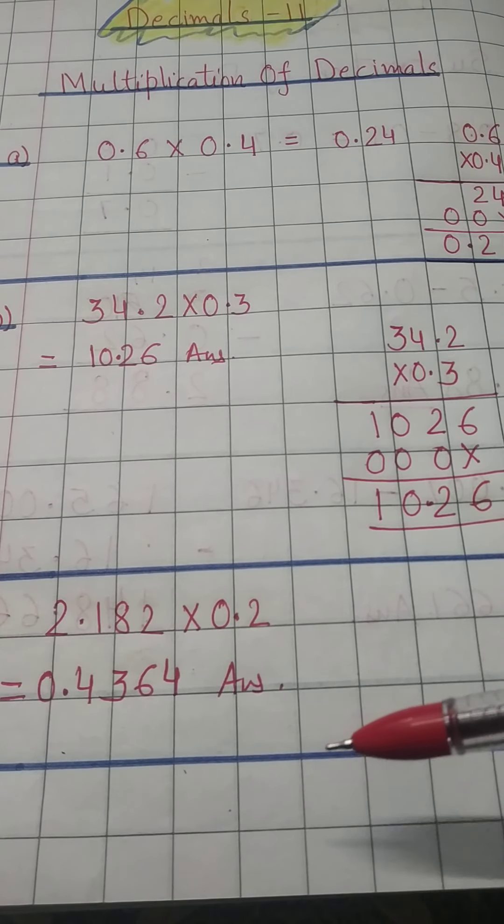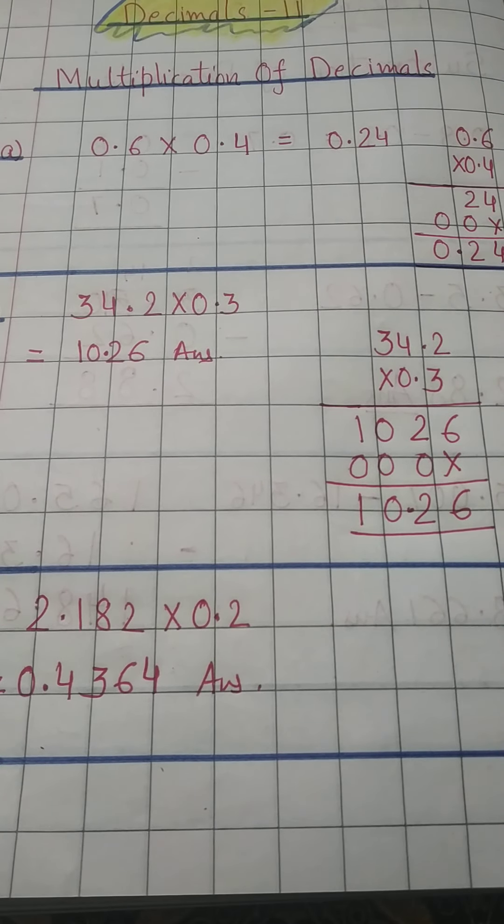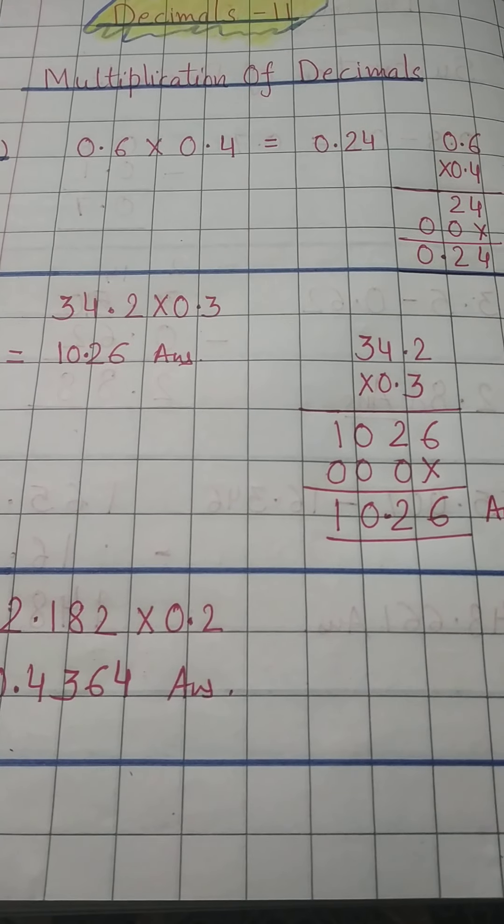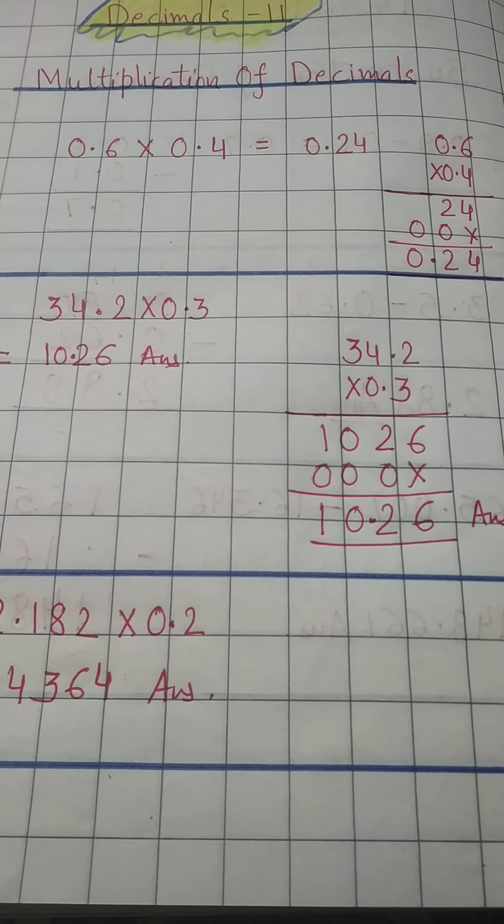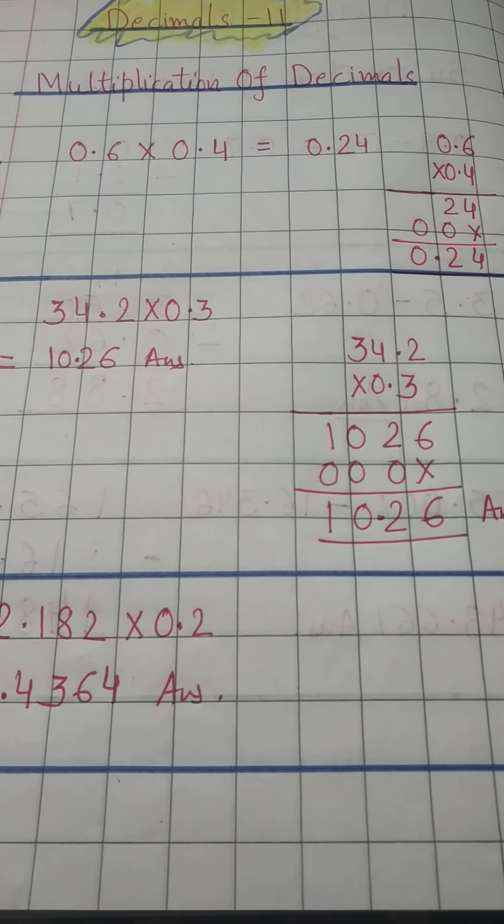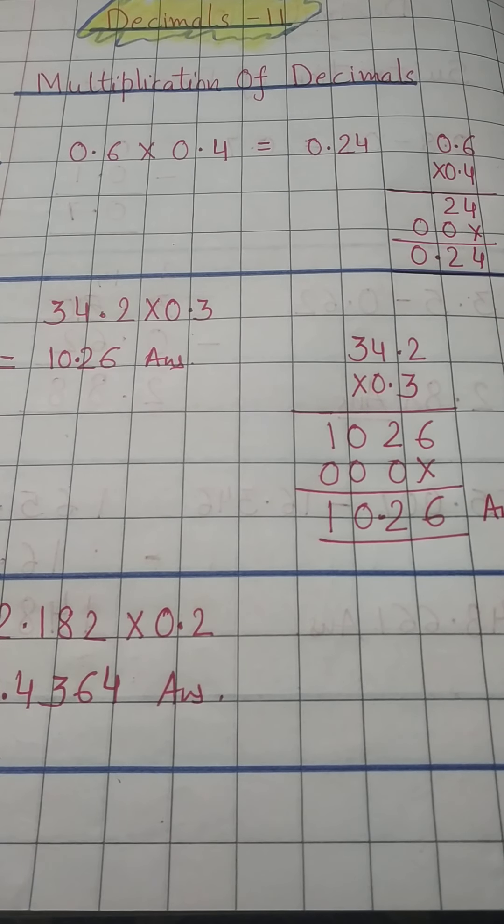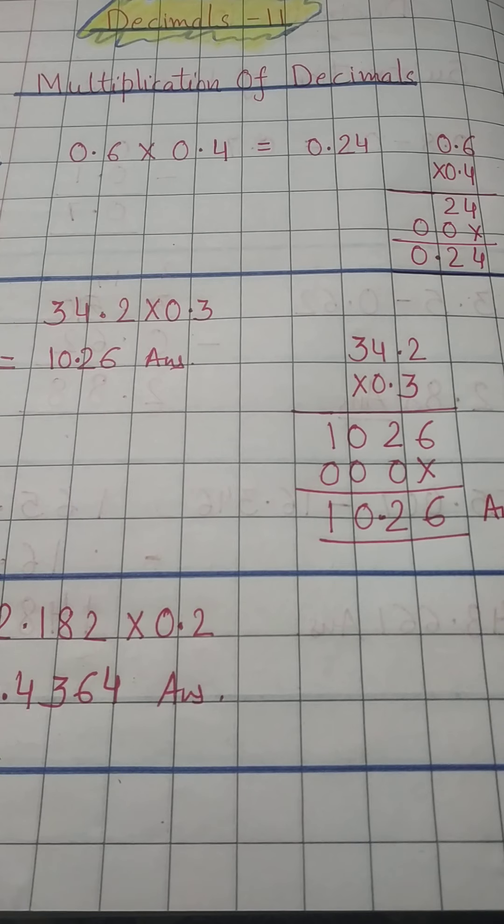So you have to multiply as you used to do in whole numbers, but you have to count the number of decimal places and then put the decimal from the right side. You have to count the number from the right side.